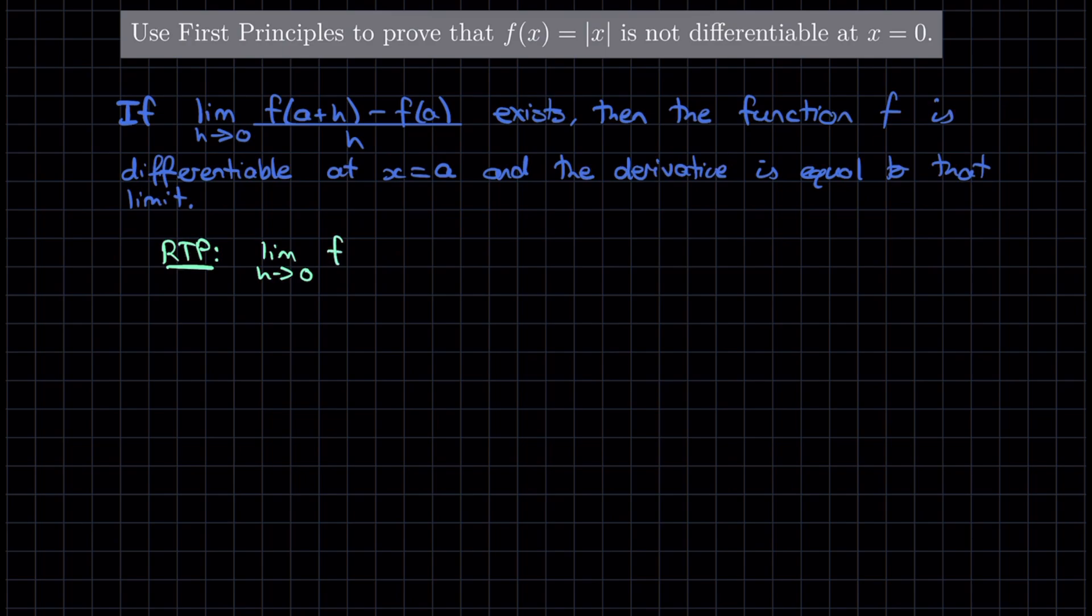So f(0+h) - f(0), all over h, I'm trying to show that this does not exist. And if I can do that, well then that means the function won't be differentiable at x equal to 0.